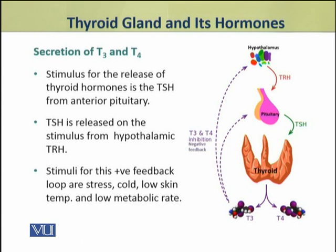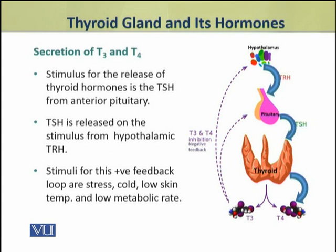The release of thyroid hormones is stimulated by thyroid stimulating hormone (TSH) from the anterior pituitary. This TSH is released in response to TRH from the hypothalamus. This is a positive feedback loop. The stimuli for this positive feedback include stress, cold and low skin temperature, and low metabolic rate. In these conditions, TRH from the hypothalamus stimulates TSH release, which in turn stimulates the release of thyroid hormones.